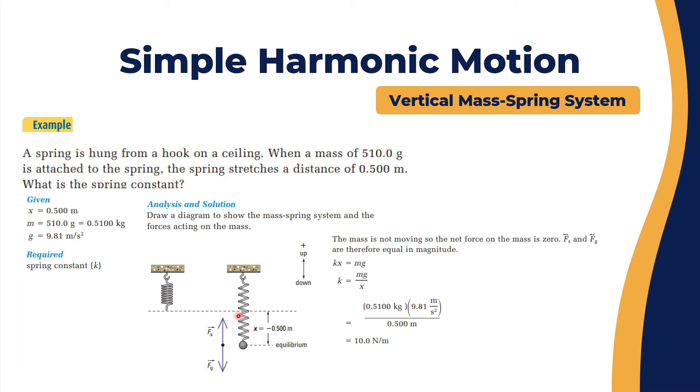Let's go to our example. We have a spring hanging from a hook on a ceiling. A mass of 15 grams is attached to the spring, the spring stretches a distance of 0.5 meters. If the initial displacement is starting from here, the new displacement is here, so you have minus 0.5 meters of displacement.